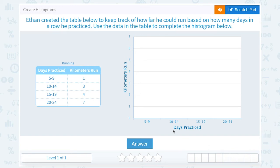Let's take a look at how to create histograms. Ethan created the table below to keep track of how far he could run based on how many days in a row he practiced. Use the data in the table to complete the histogram below.